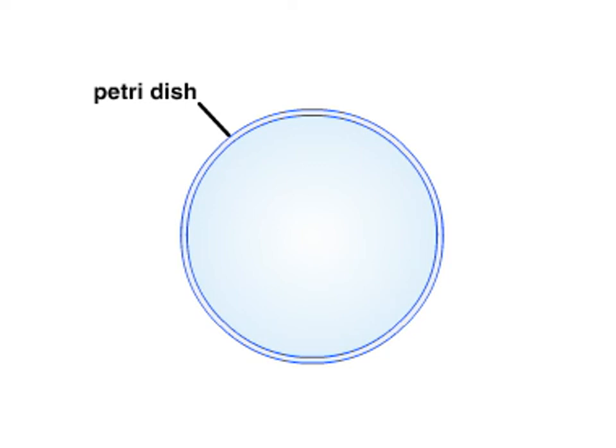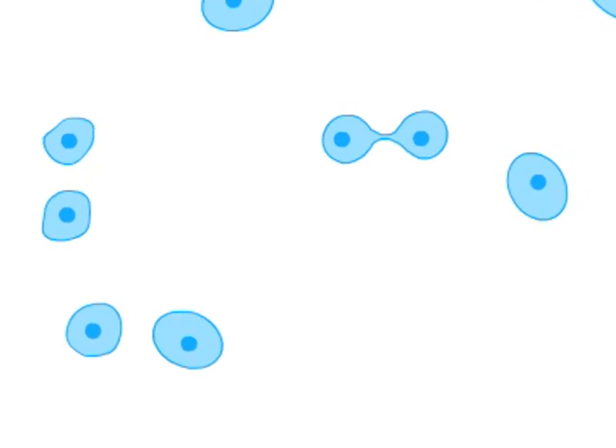When normal cells are introduced into a petri dish at low numbers, they begin to divide and proliferate.